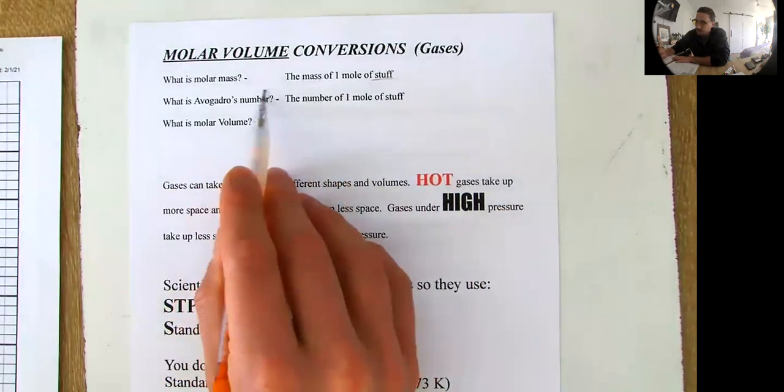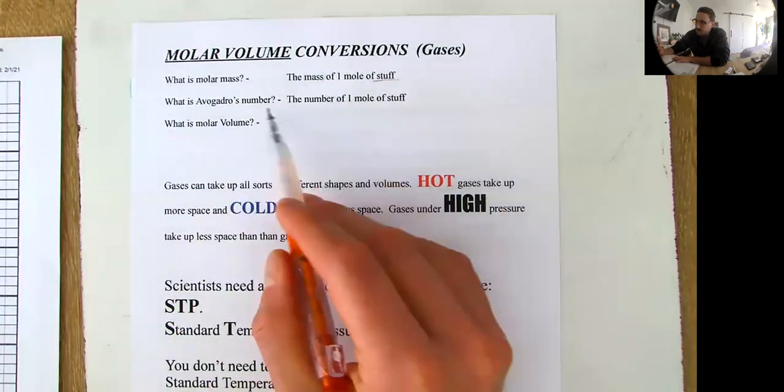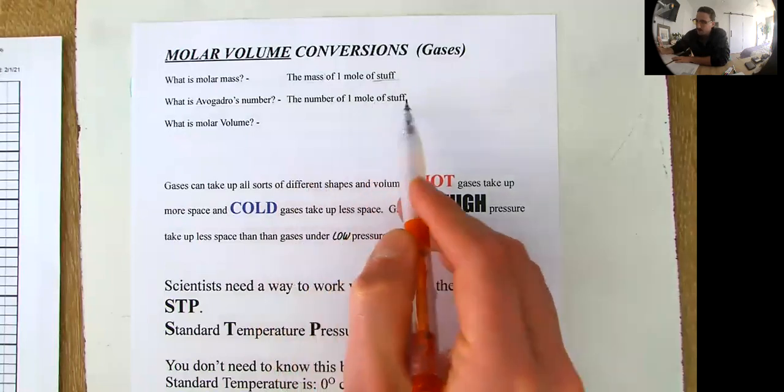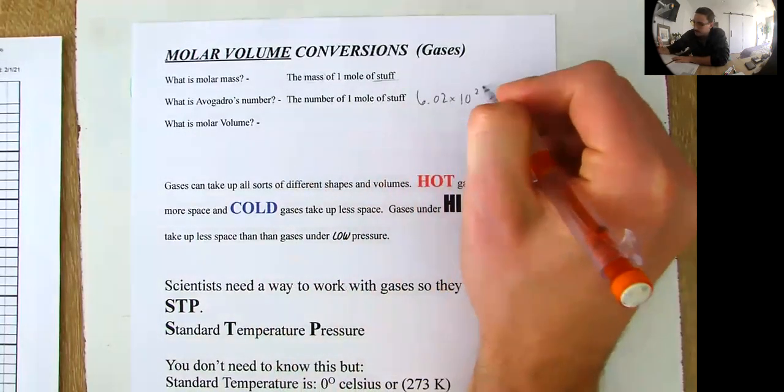And we know what Avogadro's number is, that's called the mole. Avogadro's number is the mole. So what is Avogadro's number? It's the number of one mole of stuff and we know that that number is 6.02 times 10 to the 23rd.